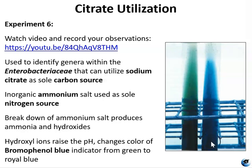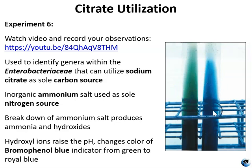But if it turns blue, that means the pH has gone up, which means those byproducts have been produced, the citrate is being utilized, the ammonium salt has been broken down, and there are ammonia and hydroxides present in the media now, which has made the pH go up. So it's gone from green to blue — that means it's positive. For experiment six, you're going to watch a video about this test and record your observations, including the indicator dye used, which specimen is positive, and how those results are observable.